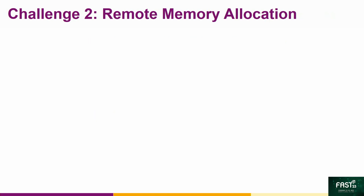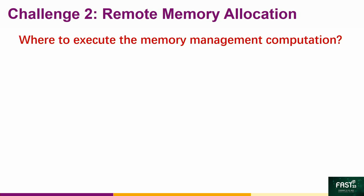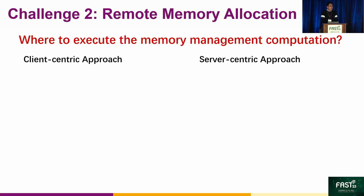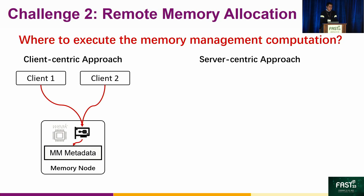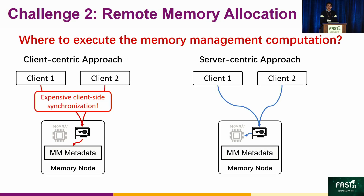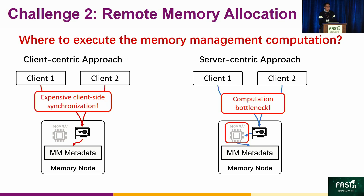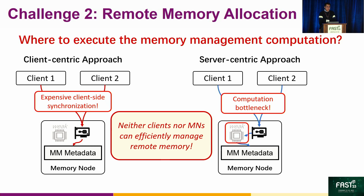The second challenge is remote memory allocation. The major problem is where to execute the memory management computation. There are two possible approaches in the fully disaggregated setting: the client-centric approach and the server-centric approach. The client-centric approach stores memory management metadata on the memory node and lets clients use one-sided RDMA verbs to modify them to allocate memory spaces. However, since memory management metadata is shared by all clients, client accesses must be synchronized, leading to high synchronization overhead. The server-centric approach uses the weak compute power on the memory node to manage this metadata, but that compute power is too weak and will be easily overwhelmed by client allocation requests. So neither clients nor memory nodes can efficiently allocate remote memory.